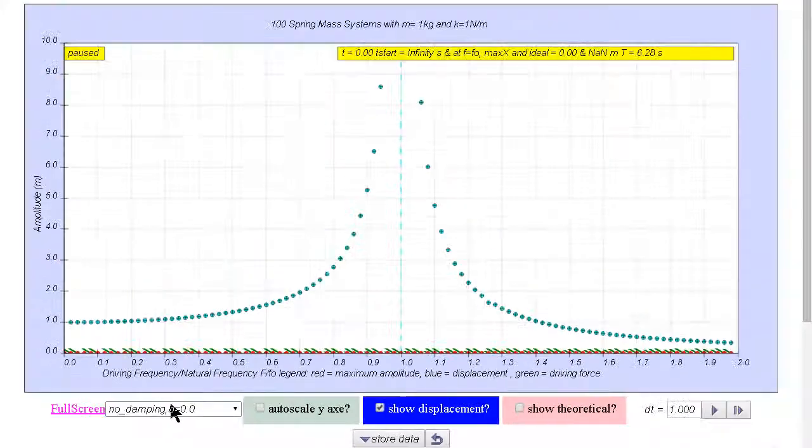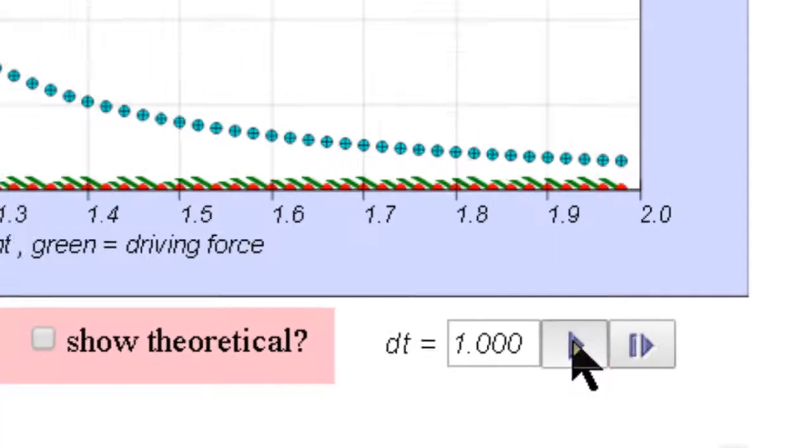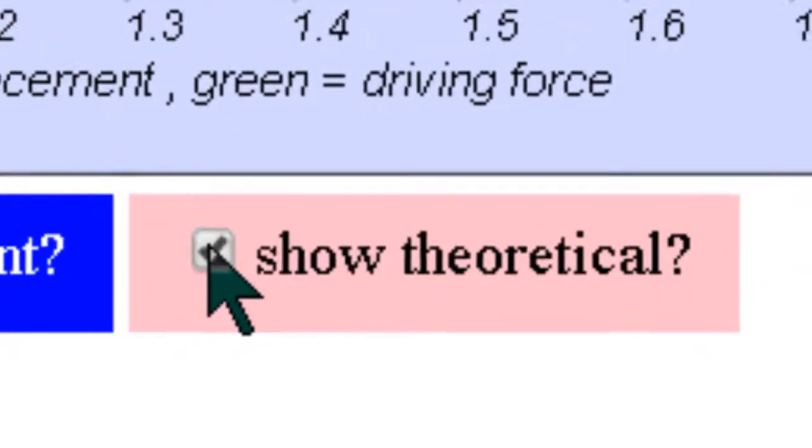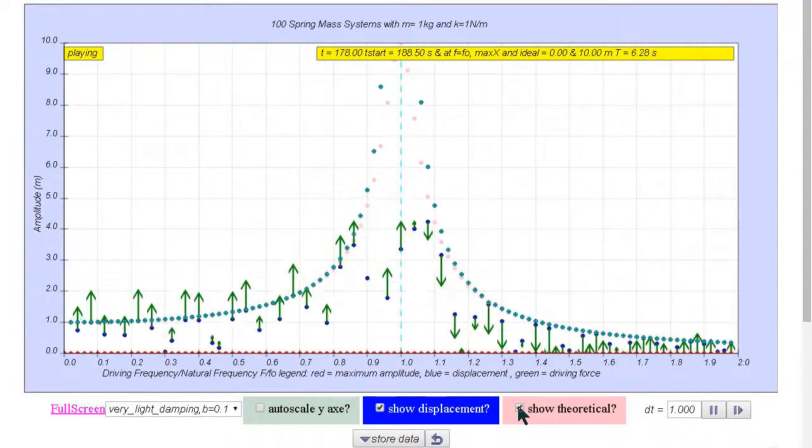Click on the store data, and you can actually scroll through the different menus for which the damping levels can be changed. And we can check on the show theoretical so that the student can know what is the steady state amplitudes like, and when the simulation runs for enough time.